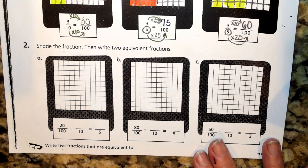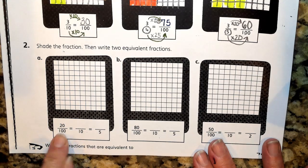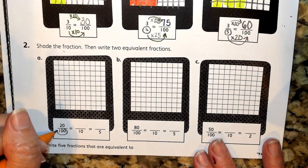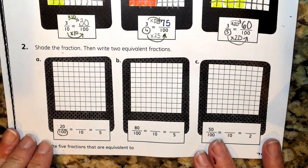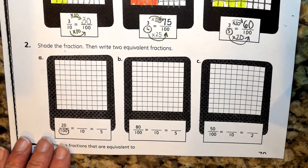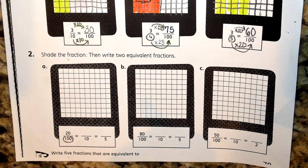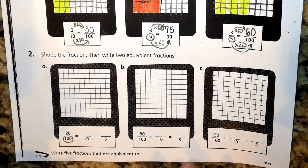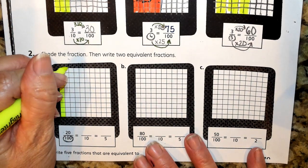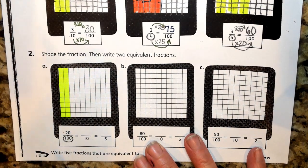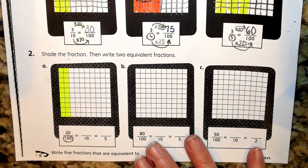So the first thing that I want to do is observe that we have 100 equal pieces, so our denominator is 100 and my numerator is 20. Right now I'm going to take my highlighter and I'm going to shade 20 equal pieces. So we have 20 equal pieces, because that's 10 and 20.